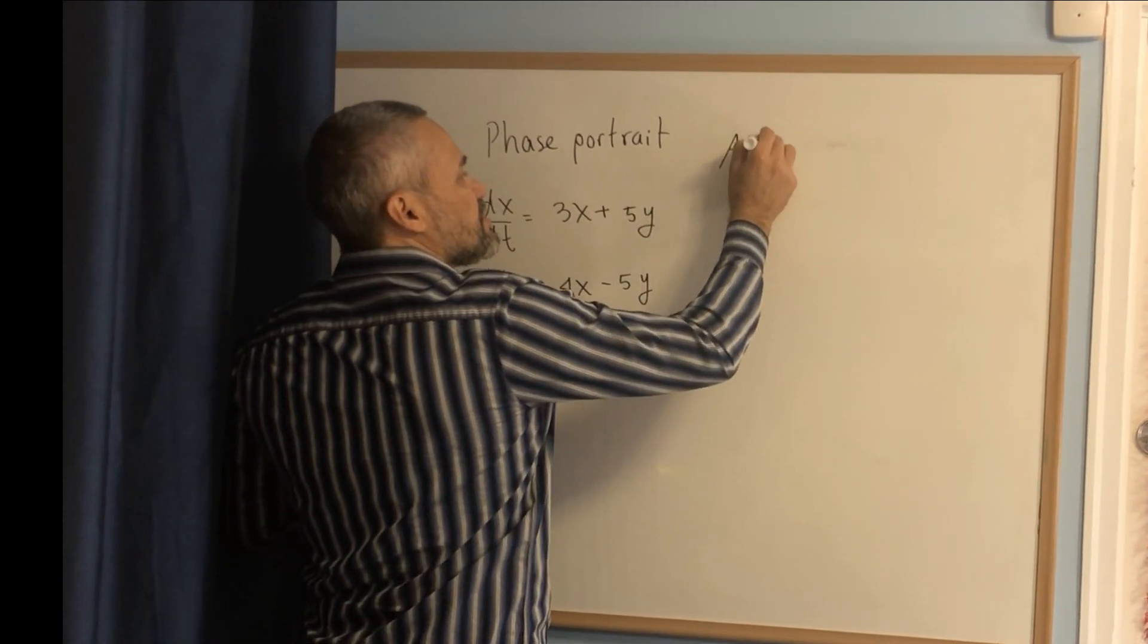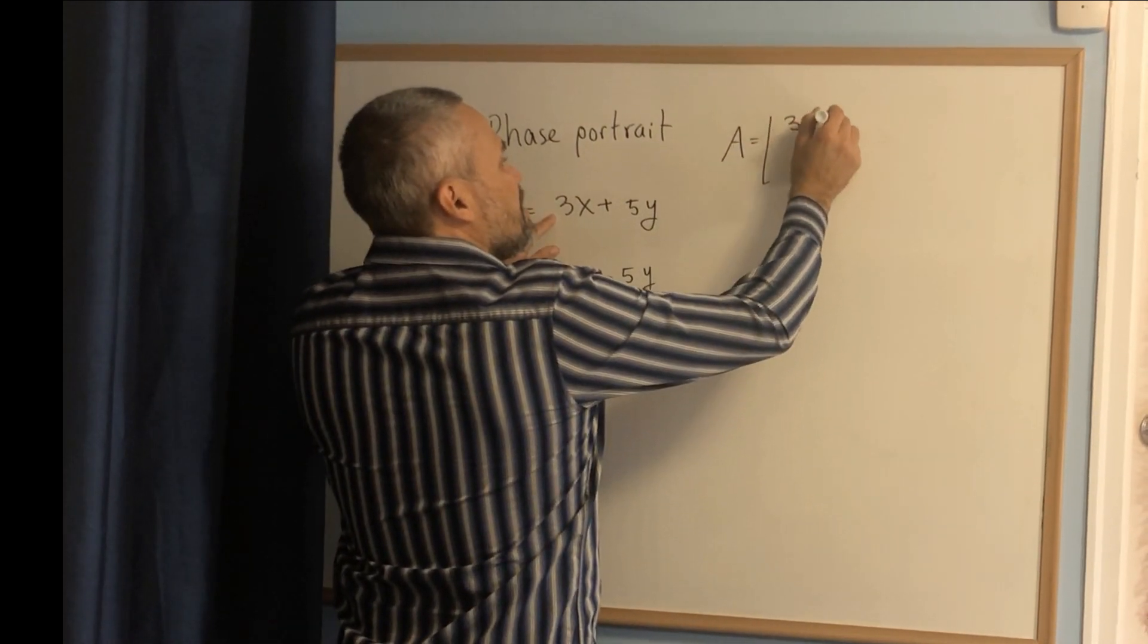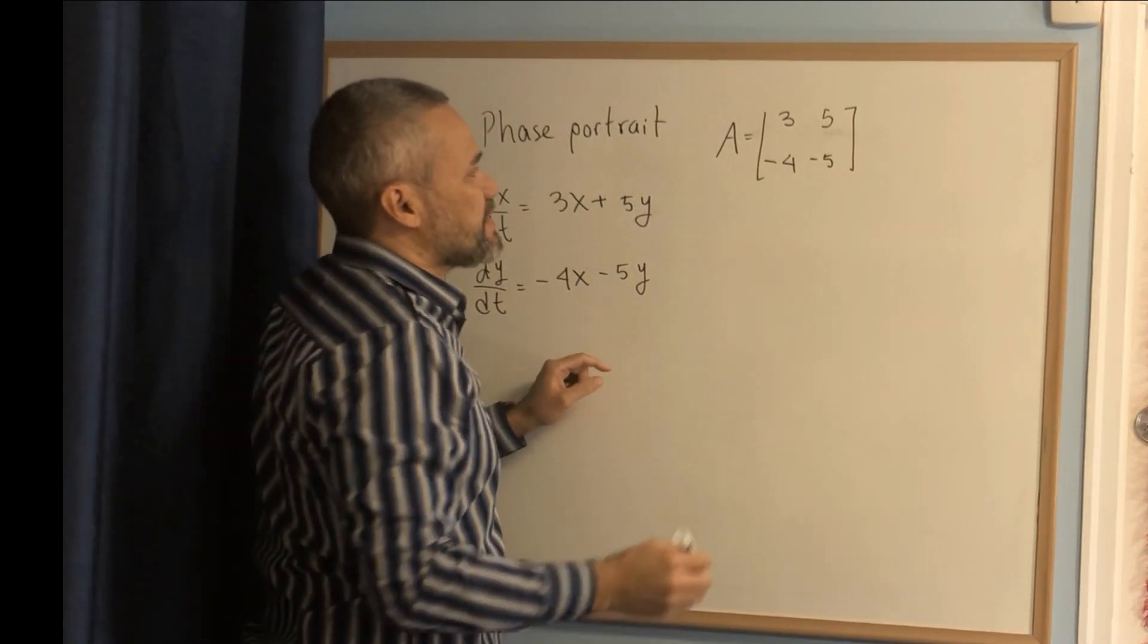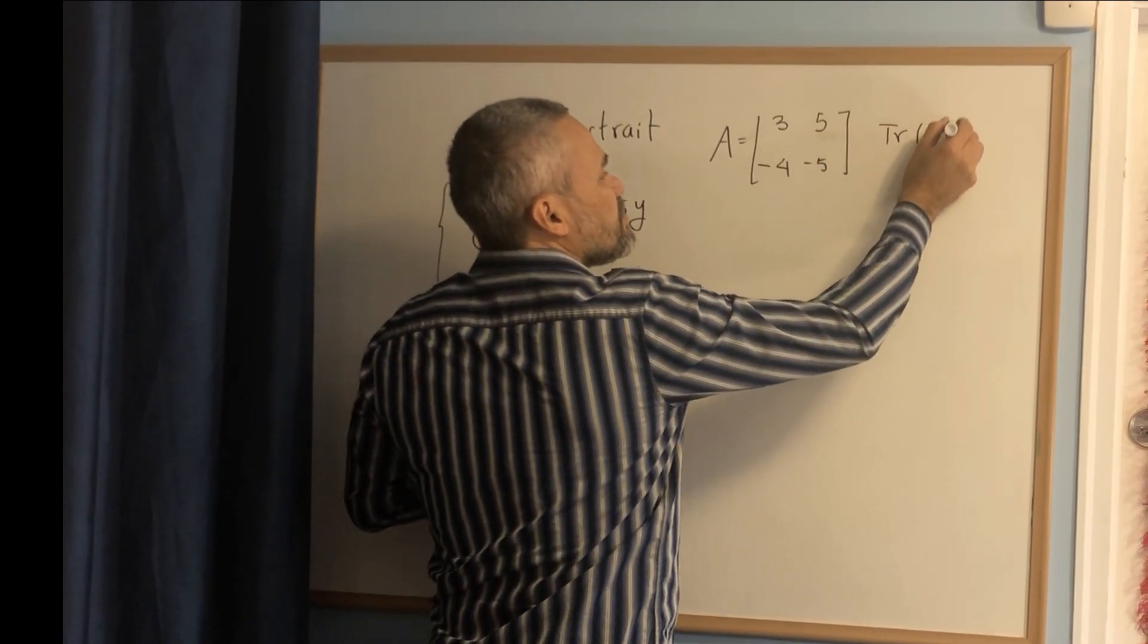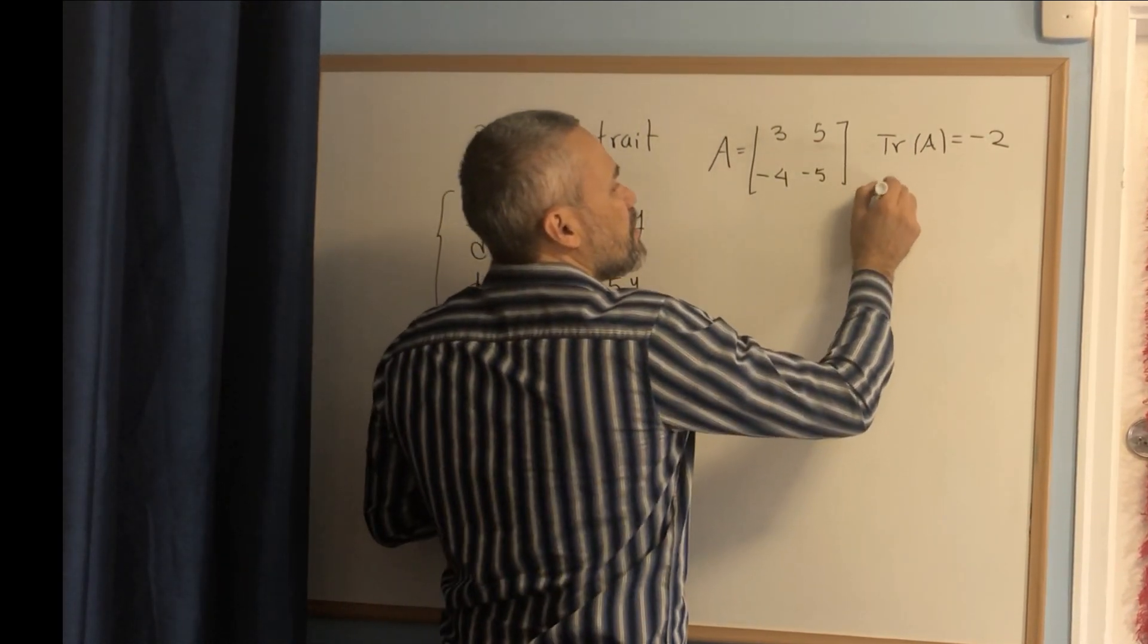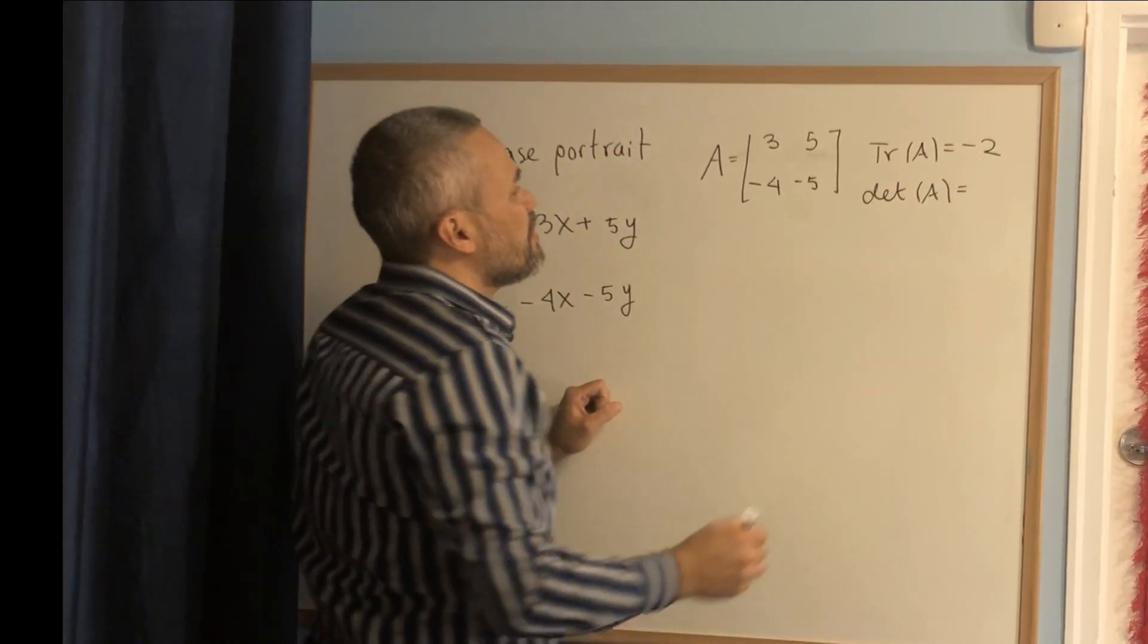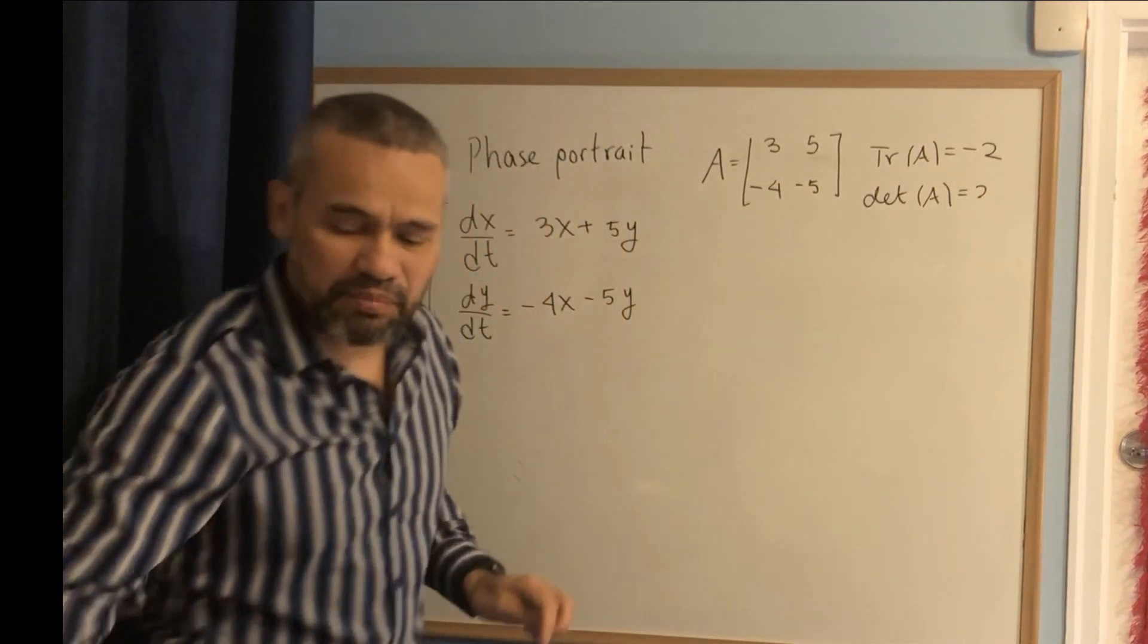as always, the first step is to write the matrix. The matrix is [3, 5; -4, -5]. Then we compute the characteristic equation, but first we need the trace. The trace is 3 - 5 = -2, and the determinant of A is -15 + 20 = 5.